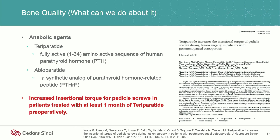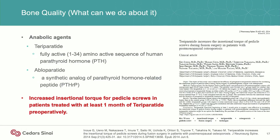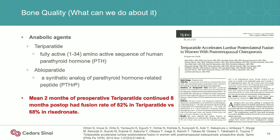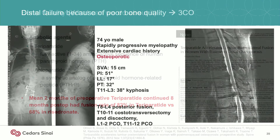What can we do about it? We can now make patients' bones stronger with anabolic agents and parathyroid agents. Teriparatide has been shown to increase insertional torque for pedicle screws when given one month beforehand, reduce pedicle screw loosening for one-to-two level fusions in osteoporotic women, and have higher rates of fusion compared to bisphosphonates. Almost half of my patients now are getting at least two months of Forteo prior to surgery if they're osteoporotic at all.